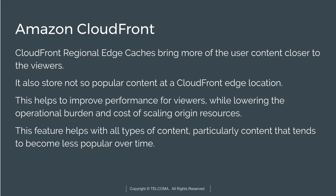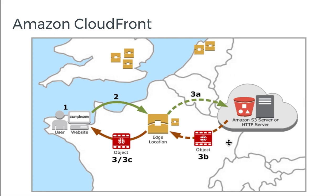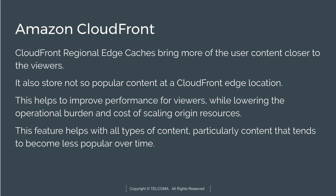Edge locations also store not-so-popular content, which helps improve performance for viewers because it lowers the operational burden and cost of scaling the original resources. If the original resources are at a distance, edge locations are created nearby so that users can access frequently accessed data from the cache rather than the origin server.